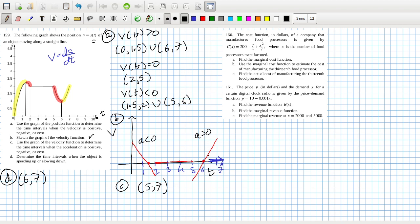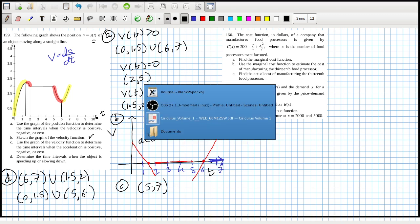That's velocity is positive and acceleration is positive, or velocity is negative and acceleration is negative. And that's 1.5 to 2. And then slowing down is when the opposite: so acceleration is negative but velocity is positive, or acceleration is positive but velocity is negative.